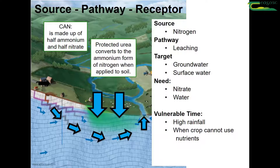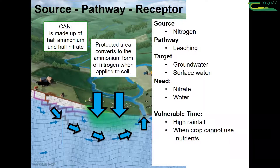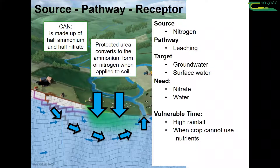The plant, of course, can use both of these forms of nitrogen. Now look at protected urea. Protected urea converts to the ammonium form of nitrogen when applied to soil, and therefore the nitrogen is now in a safer form and less likely to be leached to the environment.